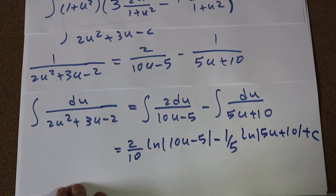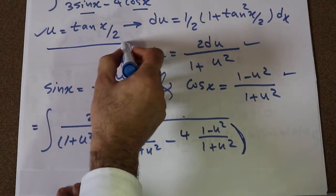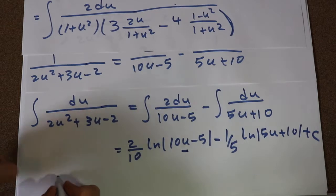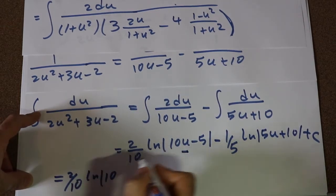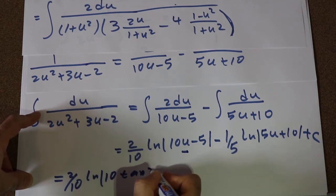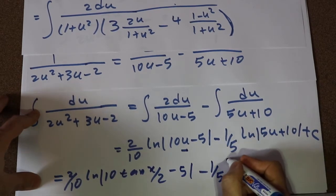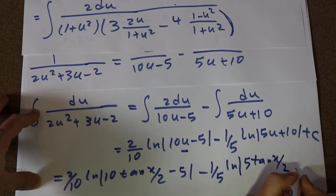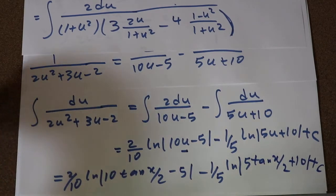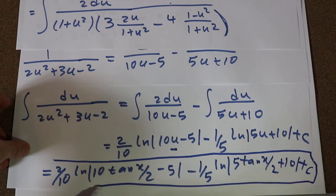All you need to do now is substitute u back with its definition, tangent x divided by 2. So the final answer is 2 over 10 times ln|10 tan(x/2) minus 5| minus 1 over 5 times ln|5 tan(x/2) plus 10| plus C. This is the solution to our integral.